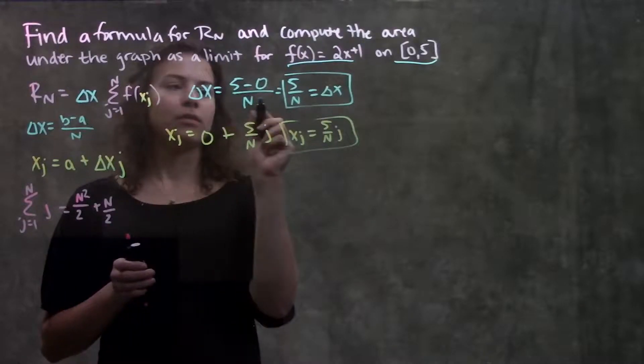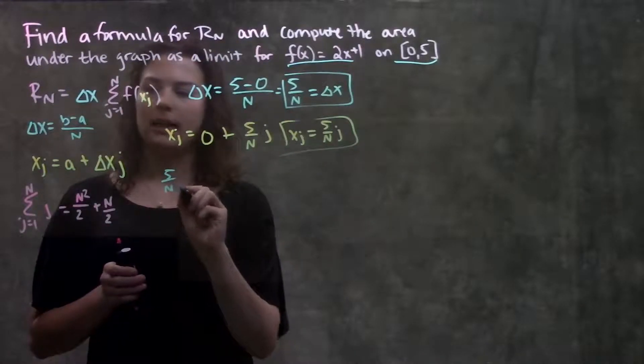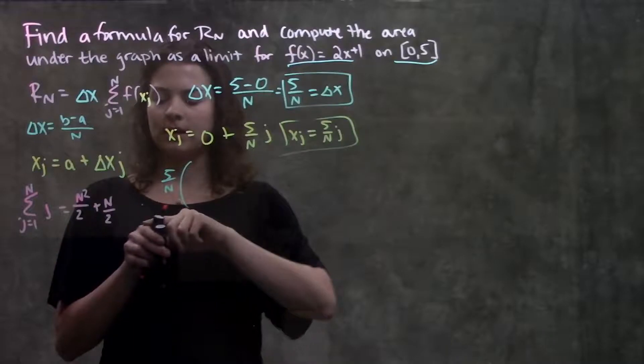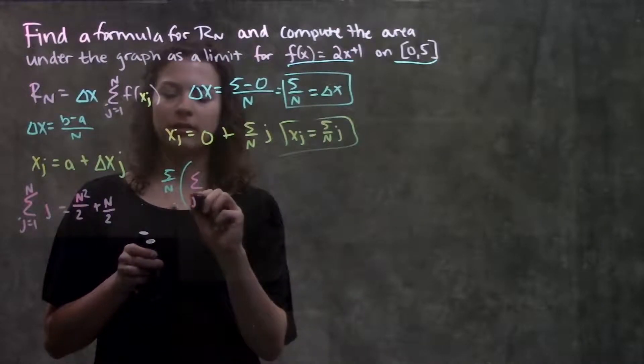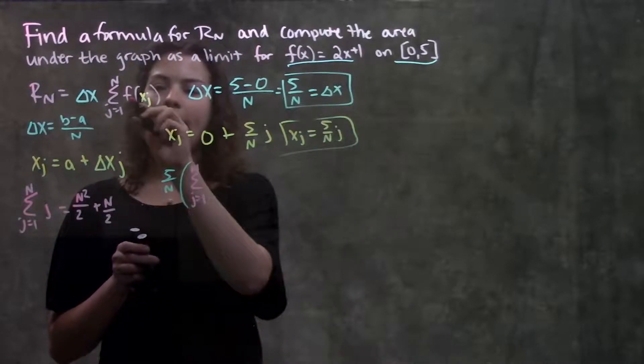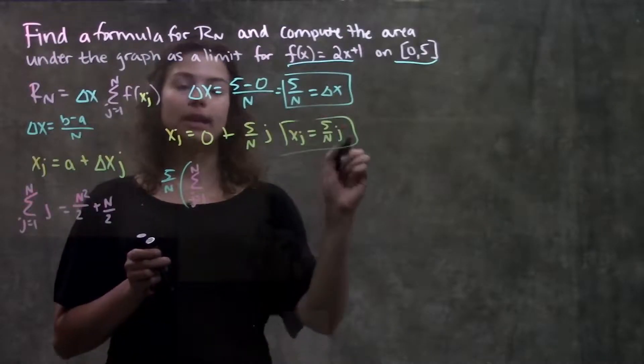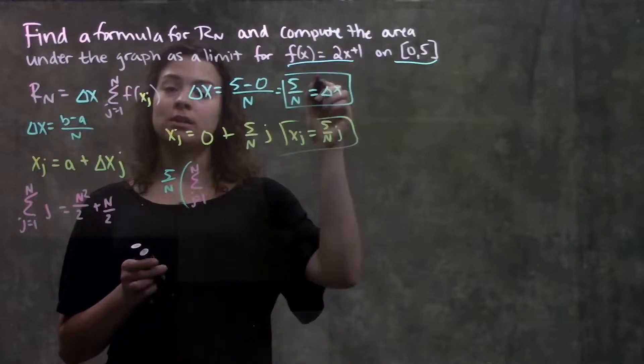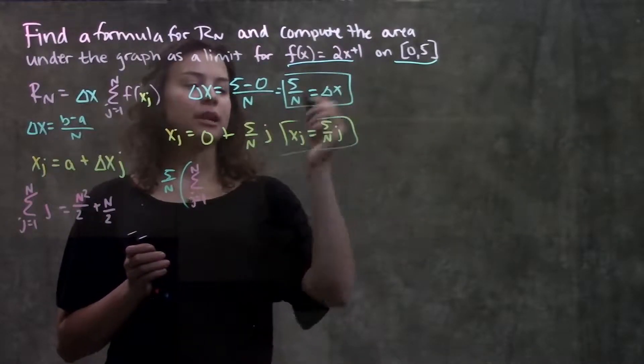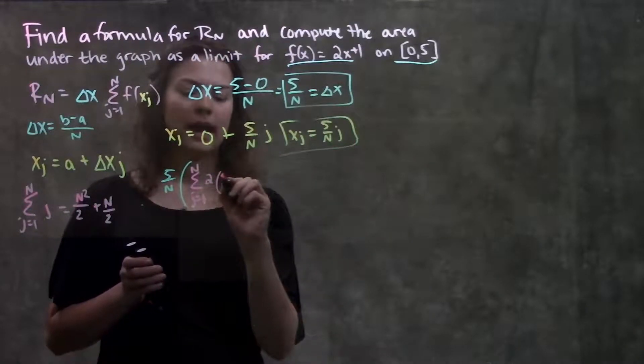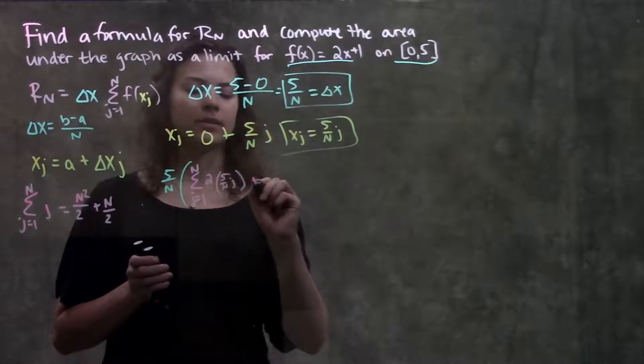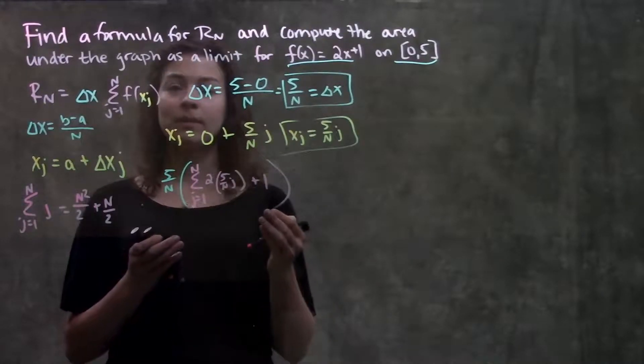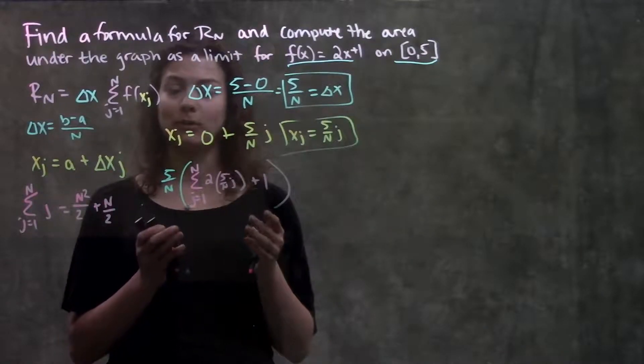So, for my Rn, I have delta x is 5 over n, times the entire quantity of summation from j equals 1 to n, f of x sub j, that just means I plug in this value into my function, wherever I see an x. So, now my function becomes 2 times 5 over n times j, plus 1. And, from here on out, we're just going to be simplifying this whole thing.